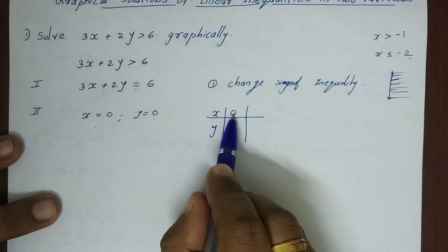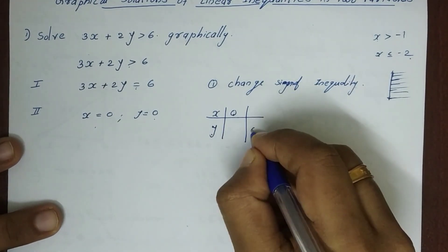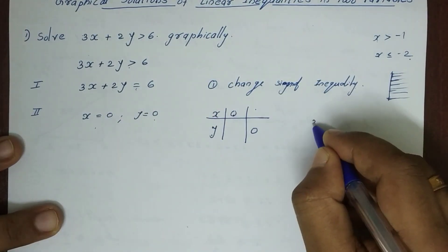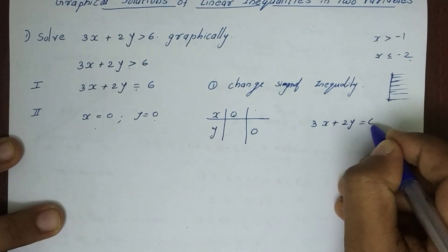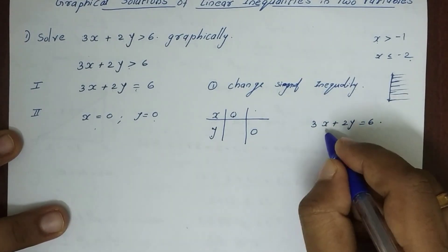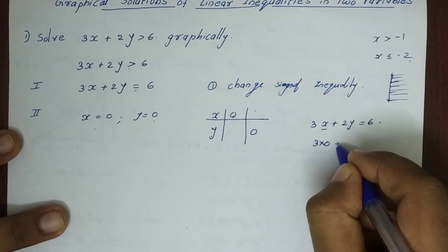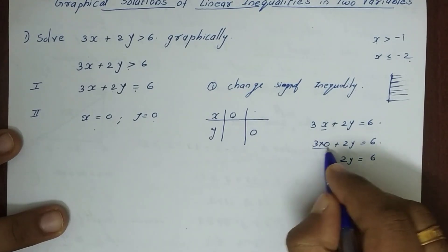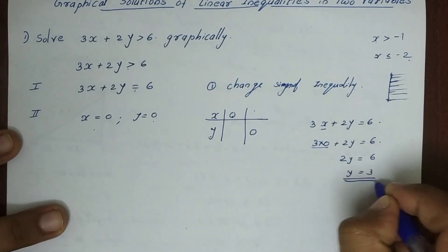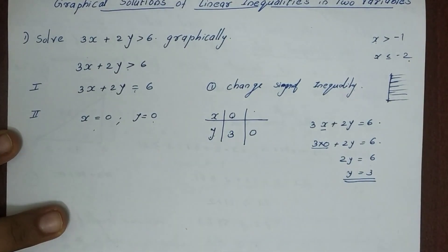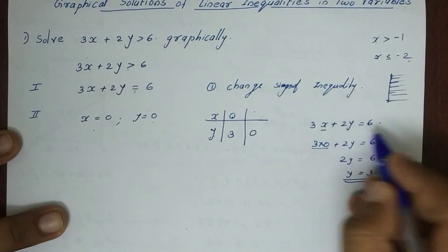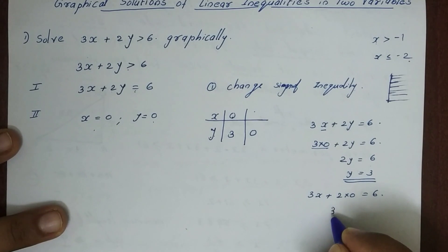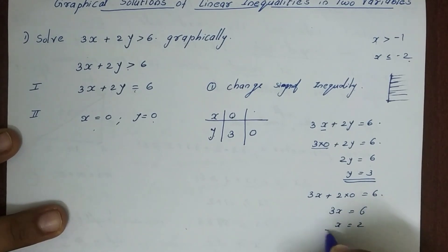When x is equal to 0, we find the corresponding y value. The equation is 3x plus 2y equals 6. Substituting x equal to 0: 3(0) plus 2y equals 6, so y equals 3. Then when y is equal to 0: 3x plus 2(0) equals 6, so x equals 2.